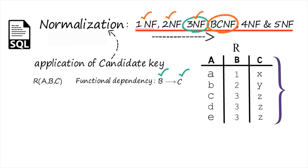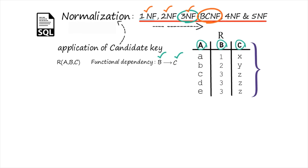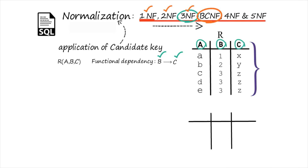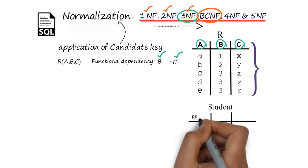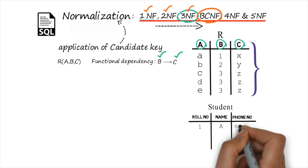According to the definition of 1NF, if a particular attribute contains atomic values, then that table is in 1NF. Atomic value means under each attribute we will have single values. For example, say we have a student table with student roll number, student name, and student phone number.